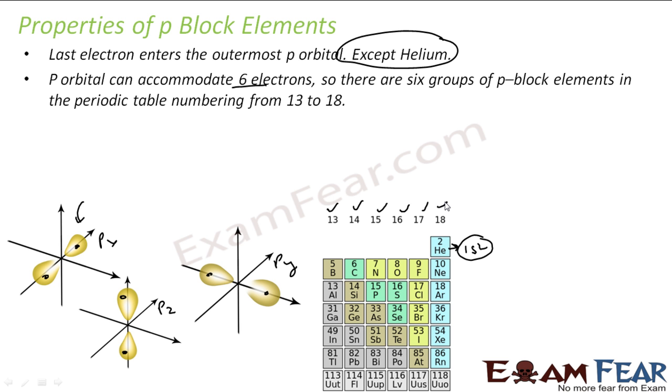The good question is why there are six groups. Six groups because the P orbital can accommodate six electrons. In this case I have P¹, only one electron in the P block. This is P², two electrons in the P block. P³, three electrons in the P block. P⁴, four electrons in the P block. P⁵, five electrons in the P block, and here it is P⁶. Helium is the exception anyway. You can ignore the helium. Apart from this everything is P⁶, and that's why we have six groups and the number of groups is 13 to 18.